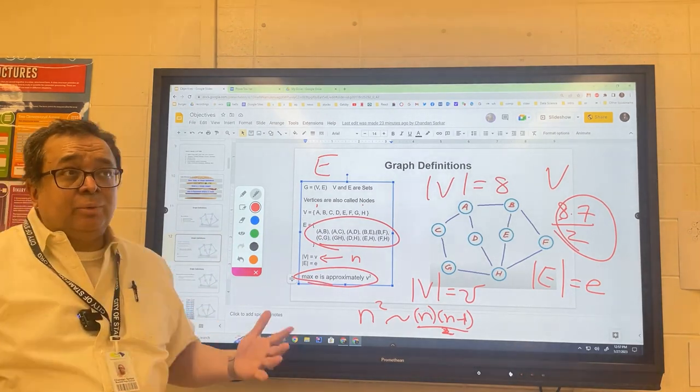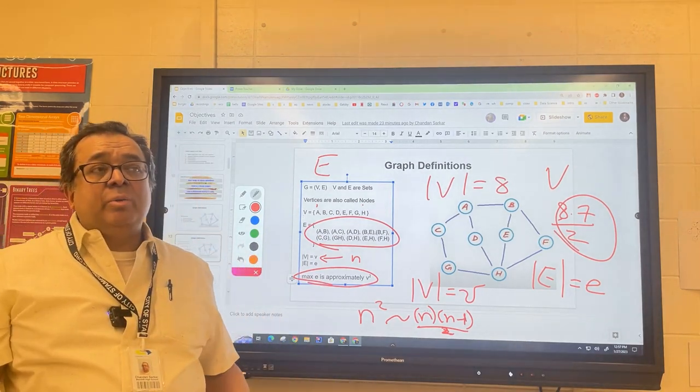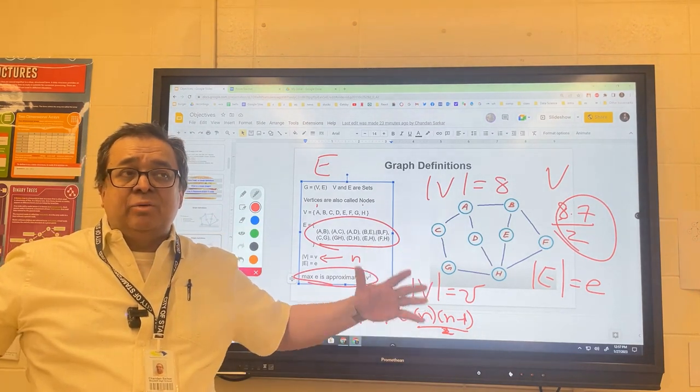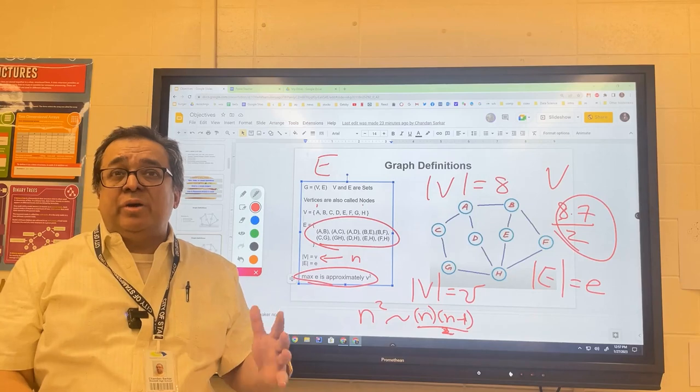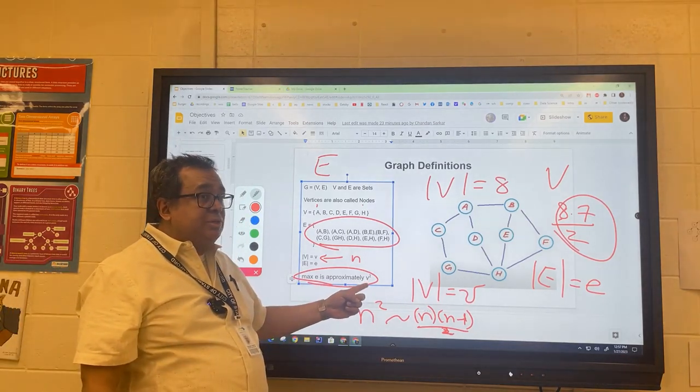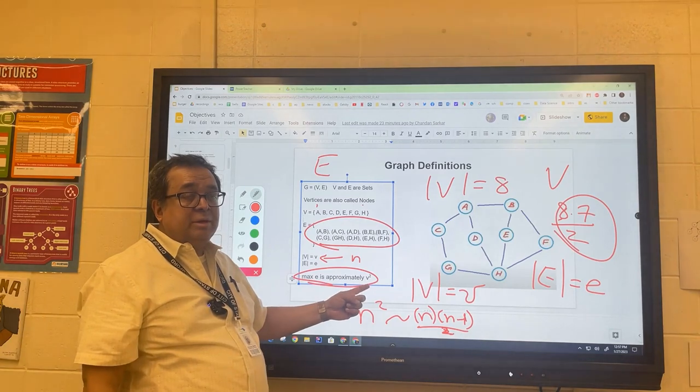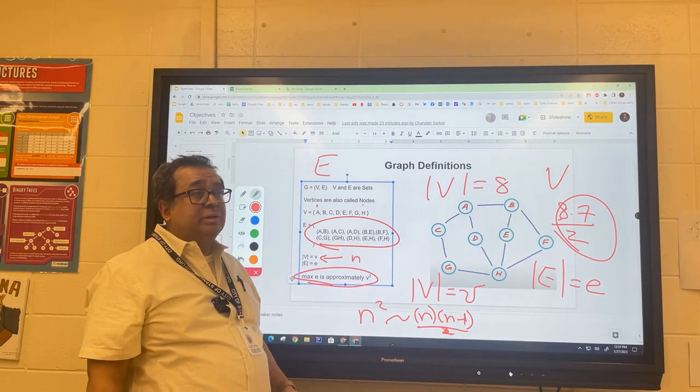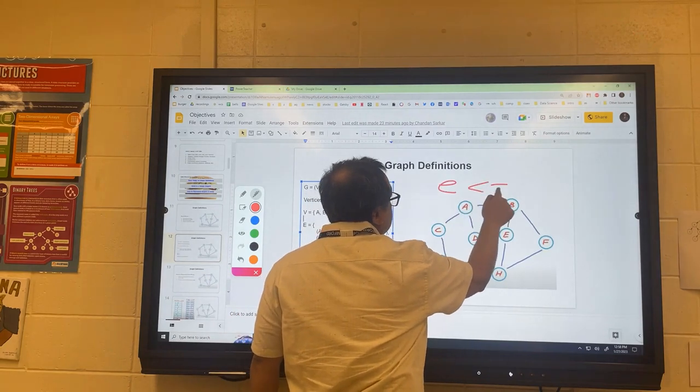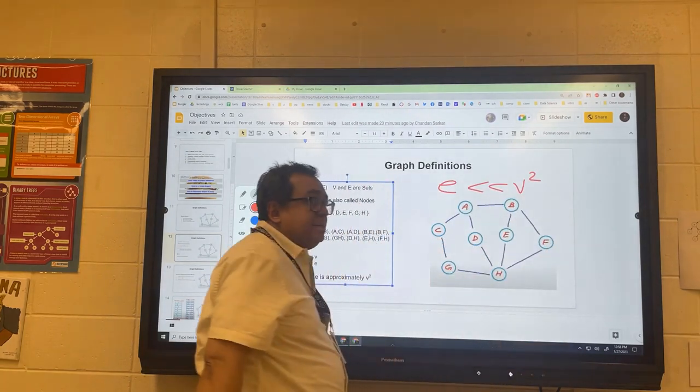I will tell you that in the real world, we typically get graphs with lots and lots of vertices, and on those graphs the vast majority of them don't have nearly as many edges as this. Most graphs in the real world, the number of edges is going to be way way smaller than the maximum allowed.